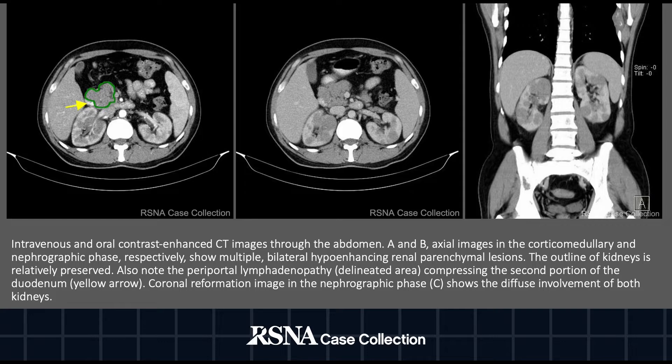Images A and B are axial images in the corticomedullary and nephrographic phases respectively, and they show multiple bilateral hypoenhancing renal parenchymal lesions. The outline of the kidneys is relatively preserved.